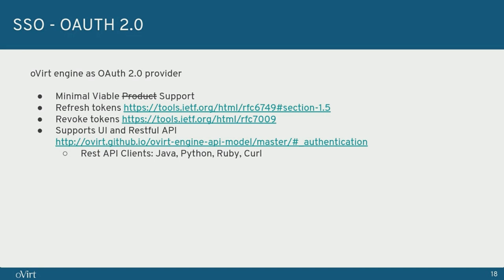oVirt engine is actually implementing OAuth2. It's a minimum viable support implemented just to cover oVirt engine's needs, covering authentication and authorization to the administrator panel, VM portal, and REST API. There are REST API clients available for Java, Python, and Ruby. Regular curl can also be used to get the token and execute API commands.